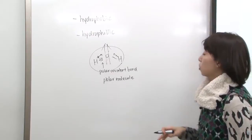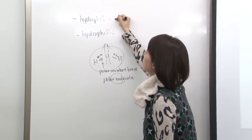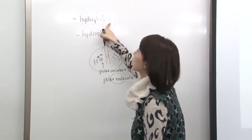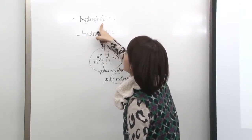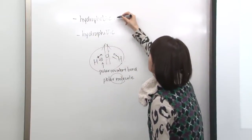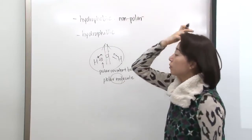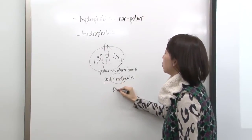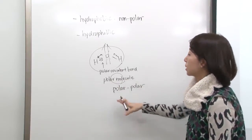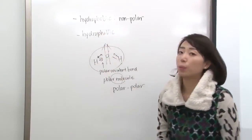If water is polar and something is hydrophobic, that means it doesn't really like water. Hydro means water, and phobic means not liking. If it doesn't interact with water, it is essentially nonpolar — because polar likes polar and nonpolar likes nonpolar. Like dissolves like. So nonpolar molecules are usually hydrophobic — for example, lipids or fats.